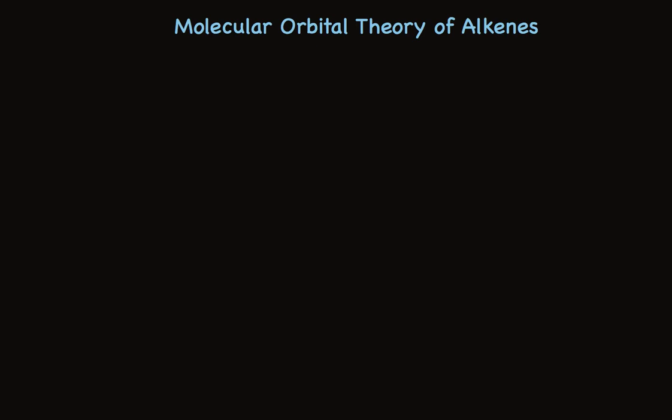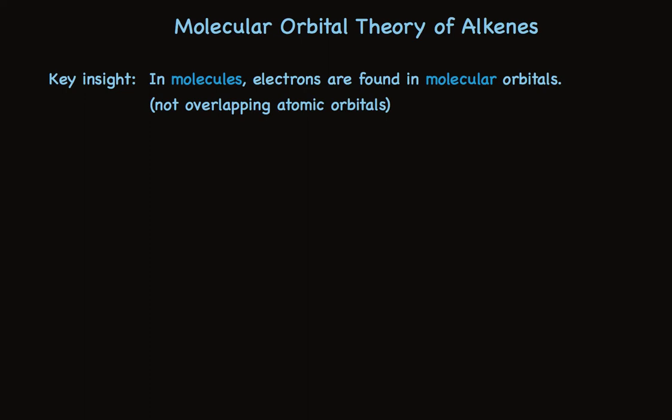First, let's look at a few key tenets of MO theory. The key insight is simple. In molecules, we should have molecular orbitals. The regions in space where electrons should be found shouldn't be necessarily described by looking at atomic orbitals, which are restricted to atoms, but rather should look at the region in space of the molecule. So the thinking is, let's talk about molecular orbitals and not be limited to atomic orbitals.